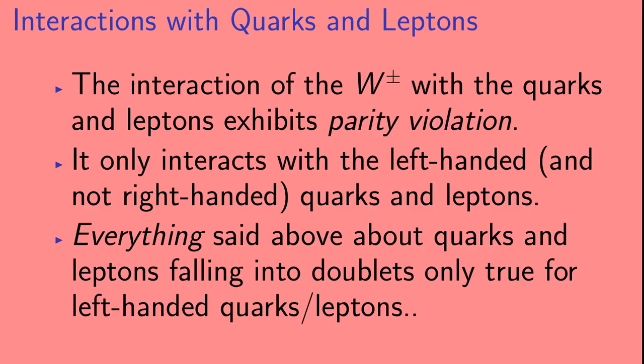Okay, so now I'll briefly describe the complications that arise with what I just said. If the stuff I say on the next two slides makes no sense to you, do not worry. We don't need it for talking about the W discovery, but it should be included here for the sake of accuracy. So, the interaction of the W with the quarks and leptons exhibits something called parity violation. It only interacts with the left-handed and not the right-handed quarks and leptons. Everything that I've said above about quarks and leptons falling into doublets is only true for the left-handed quarks and leptons.